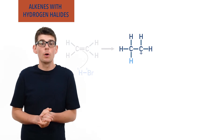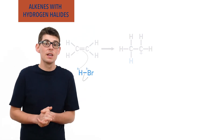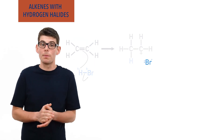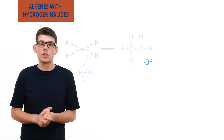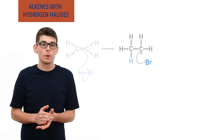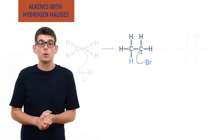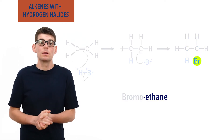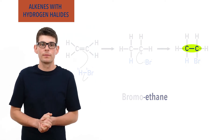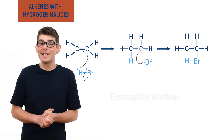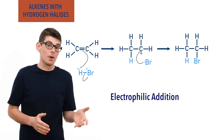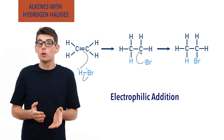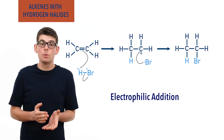Whilst this happens, the bond in the hydrogen bromide molecule also breaks, forming a negatively charged bromide ion. The negatively charged bromide ion with a new lone pair of electrons gets attracted to the positively charged carbon in the intermediate and forms a bond with it, creating a new molecule — bromoethane. The bromo tells us that there is a bromine atom in the molecule and the ethane tells us that we now have a saturated molecule. This reaction is an example of electrophilic addition as the species that starts the reaction, the partially positive hydrogen, acts as an electrophile and an addition reaction takes place. Two atoms are added to the double bond and only one product is formed.